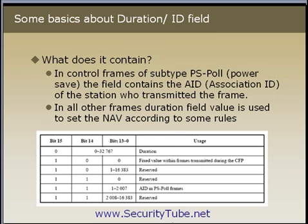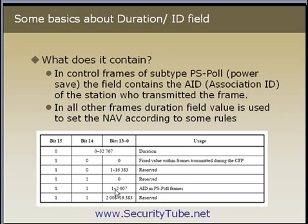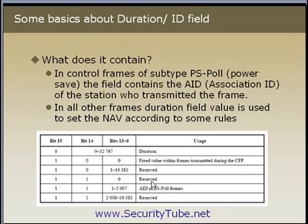The table below shows how the decision is made. If the higher-order 2 bits are set to 1 and the lower-order bits 0 to 13 are between 1 and 2007, then that field will be taken as the AID in a PS-Poll packet. If bits 0 to 13 are beyond 2007, it is a reserved value and will not be used for parsing. Similarly, if the upper 2 bits are 1 and the lower 2 bits are all 0s, that is also a reserved condition.